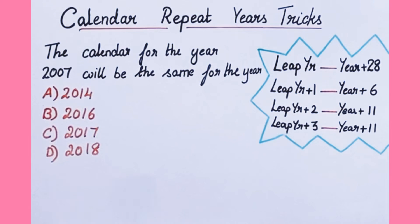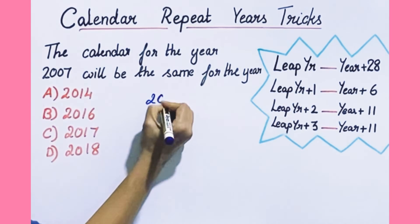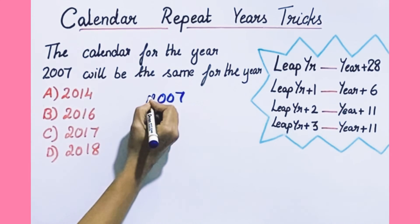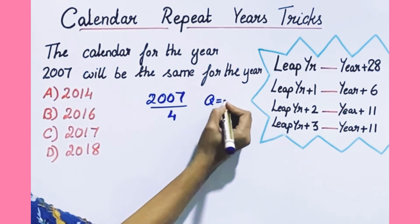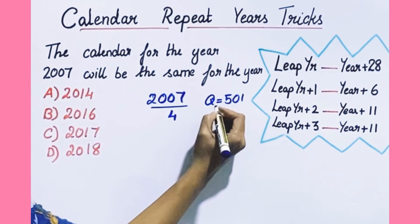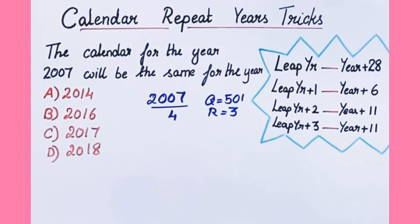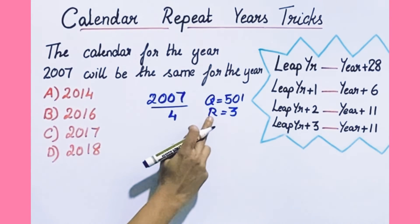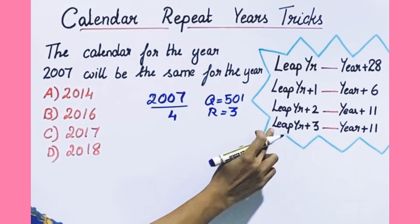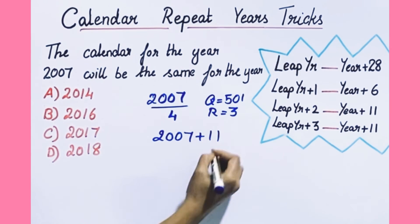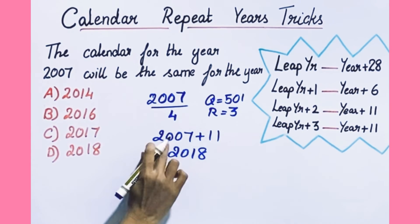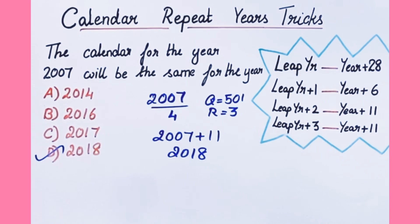Now another question: the calendar of the year 2007 will be the same for which year? To find out, check whether 2007 is a leap year or not — divide it by 4. The quotient will be 501 and the remainder is 3, so it's leap year plus 3. If it is leap year plus 3, you have to add 11. Take 2007 and add 11, which is 2018. So this calendar repeats in 2018 — option D is the correct answer.